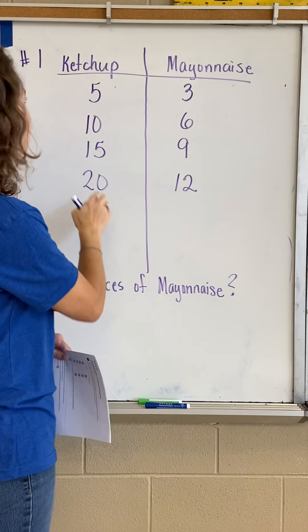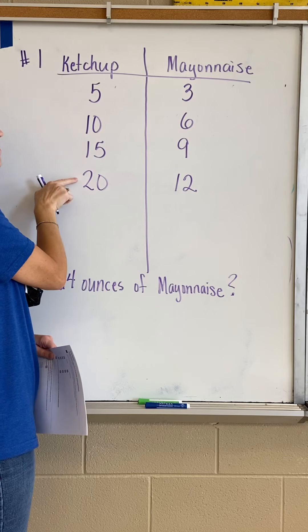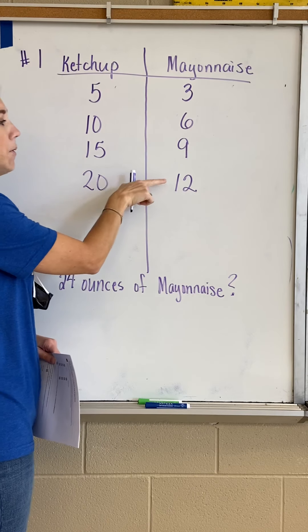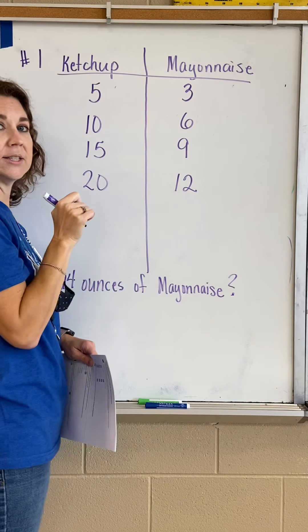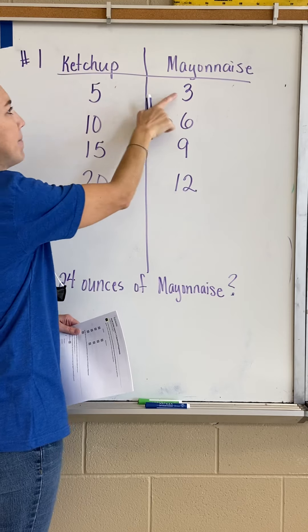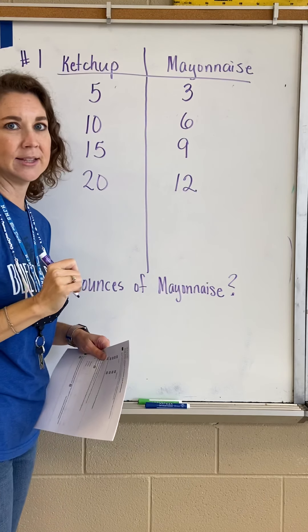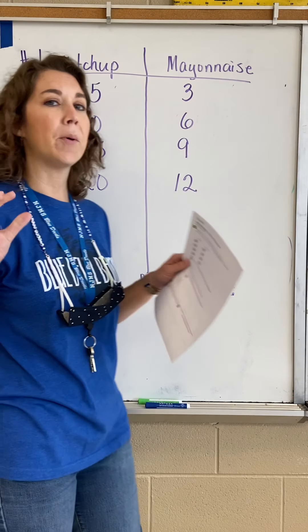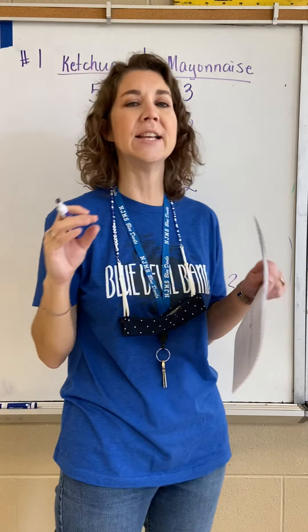That means if you use 20 ounces of ketchup, you would put in 12 ounces of mayonnaise, and it would taste the same — the same flavor — as if you use five ounces of ketchup and three ounces of mayonnaise. It stays the same because our proportion is equivalent, so the flavor will stay the same.